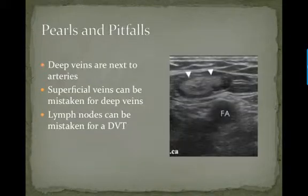Here are some pearls and pitfalls when completing a DVT study. First, you want to make sure that you are identifying deep veins. Deep veins are next to arteries, as we saw in the popliteal example. Superficial vessels can often be mistaken for the deep veins, so you need to make sure that you're looking at a vessel next to an artery.